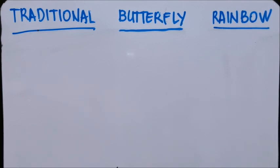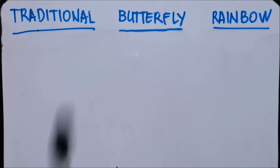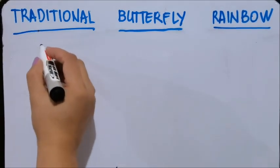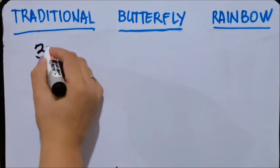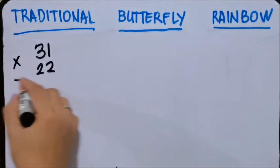Hi, in this video I will share with you an easy way on how to multiply two digits. First is the traditional way, butterfly technique, and rainbow. Okay, let's try an example.